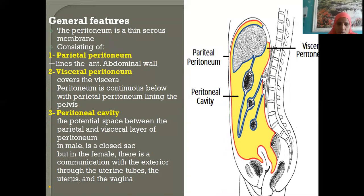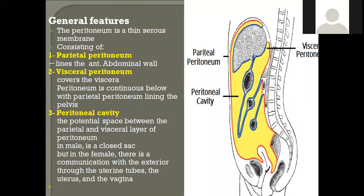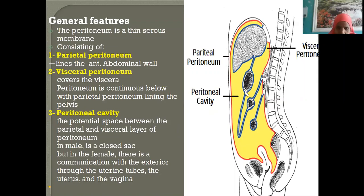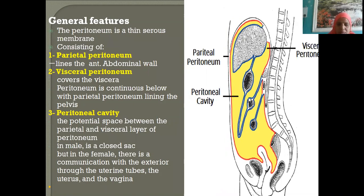On the inferior aspect of the liver, the peritoneum comes close to the stomach. The connection between the stomach and the liver is the lesser omentum. The peritoneum then continues from the greater curvature of the stomach, hanging downward like an apron — this is the greater omentum, which becomes continuous with the transverse colon.